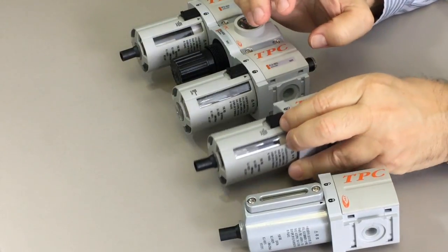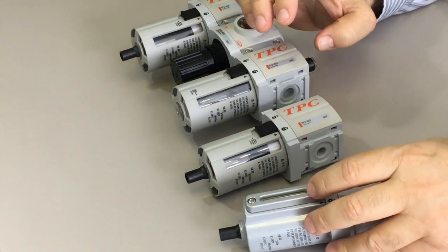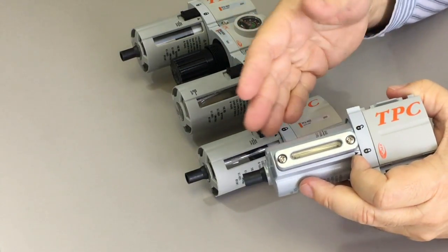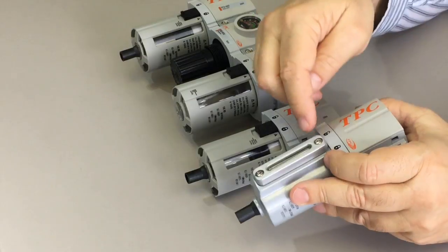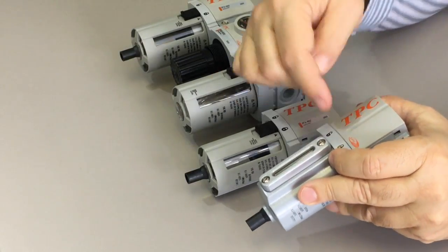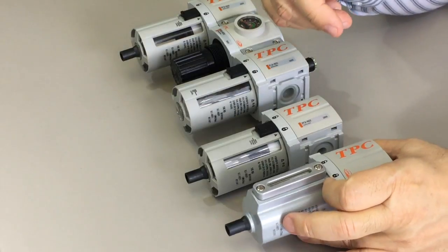As I mentioned, the ports are available in either 1/4 or 3/8. You can also get a metal bowl, same options, manual or automatic drain, and the metal bowl can be either with or without a sight glass to see what your level of condensation is in the bowl.